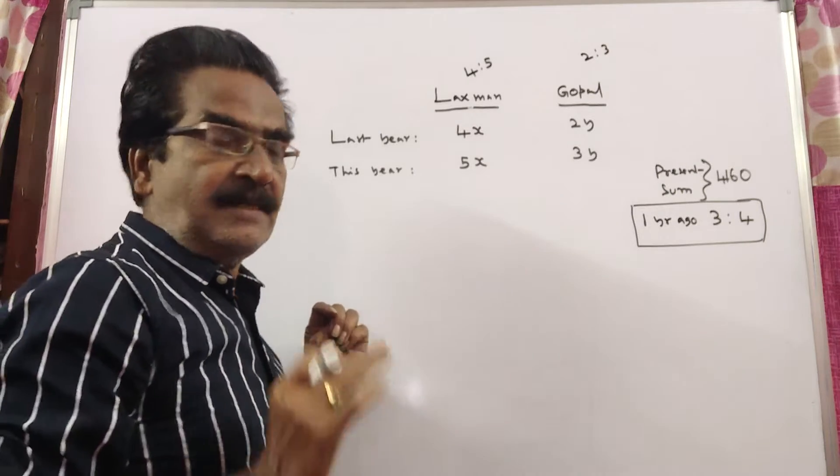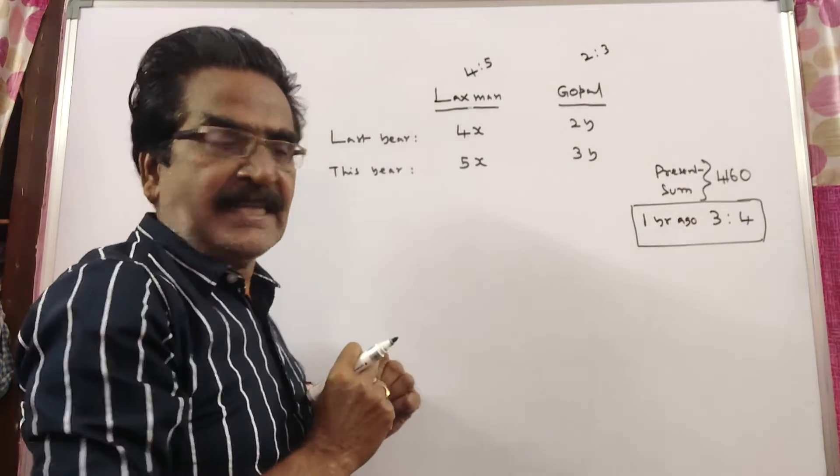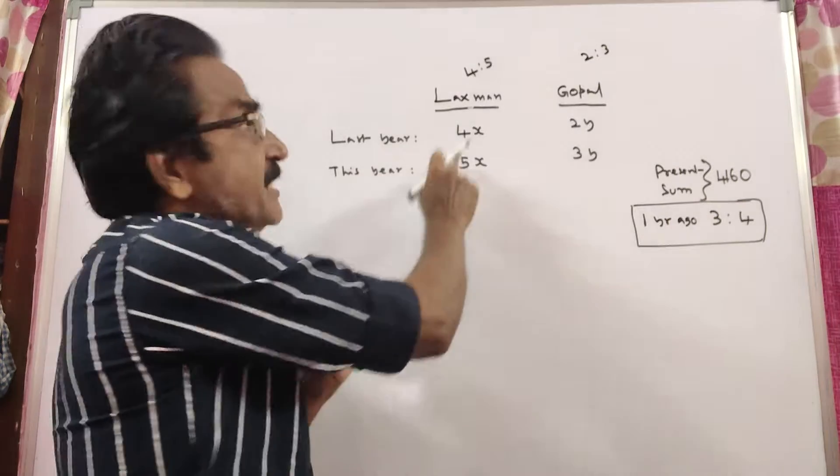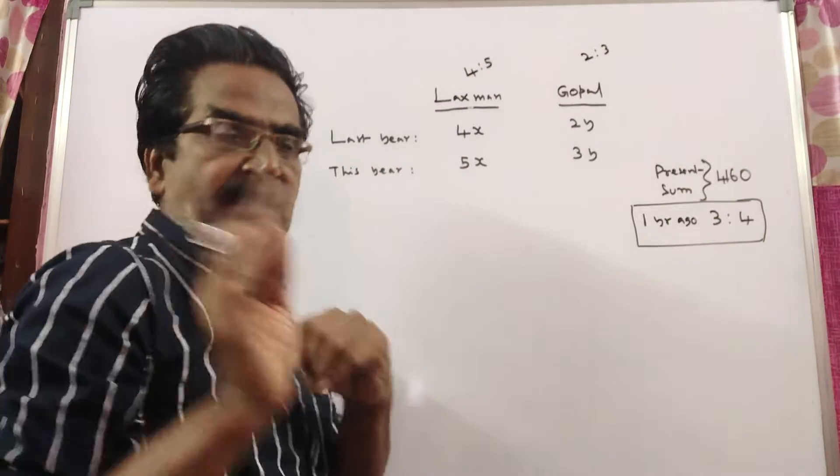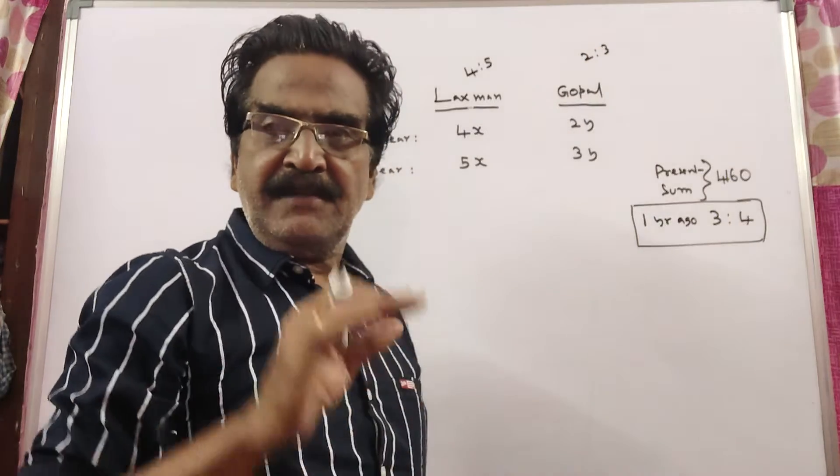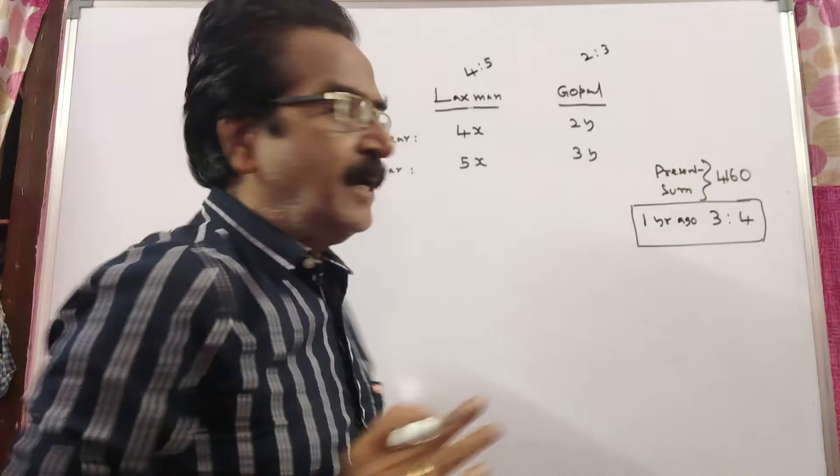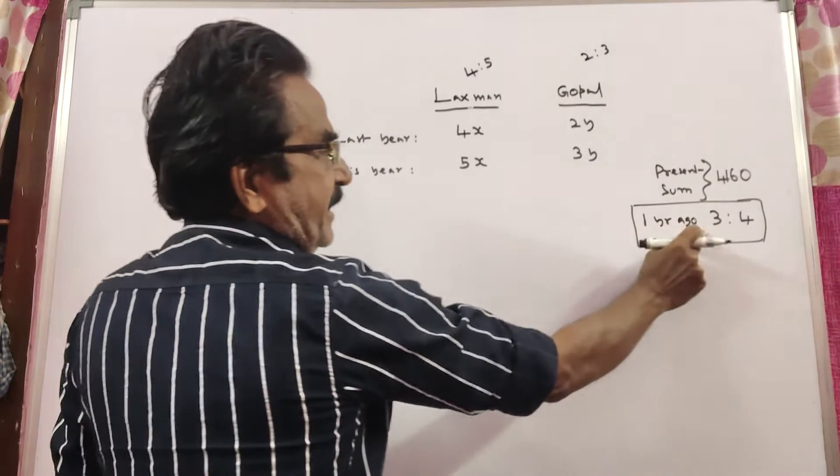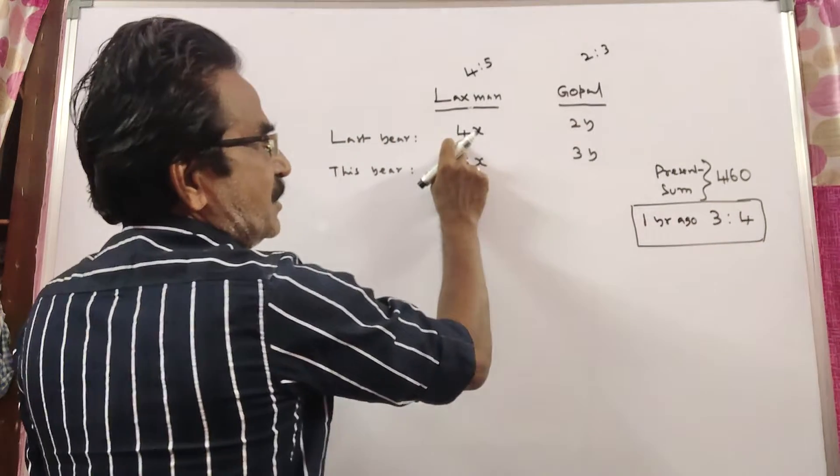That means Lakshman's last year salary 4x, Lakshman's this year salary 5x. In the same way, Gopal's last year salary 2y, this year salary 3y. And it is given that 1 year ago, that is last year,